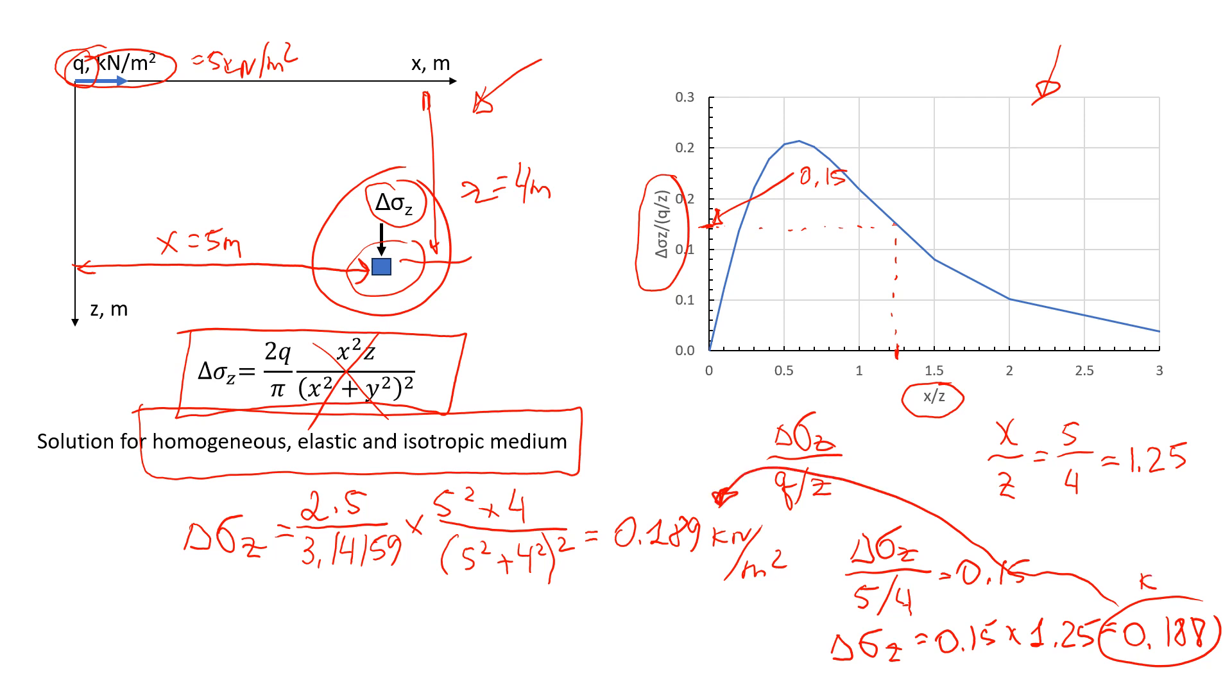Of course, we shouldn't forget to write units, kilonewton per square meters. So that's two ways to solve this, just using the formula or just using this graph. Either way is fine. Just decide by yourself which one you're going to use. That's it for this tutorial. Thanks for watching it. Have a nice day. Bye.